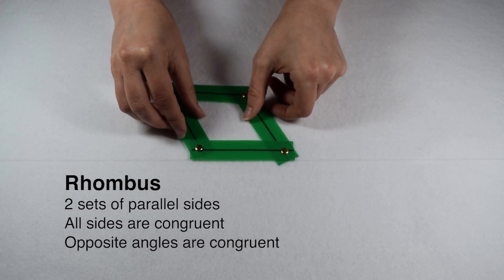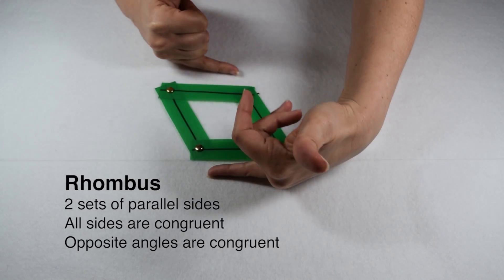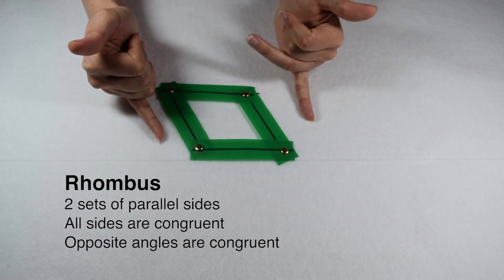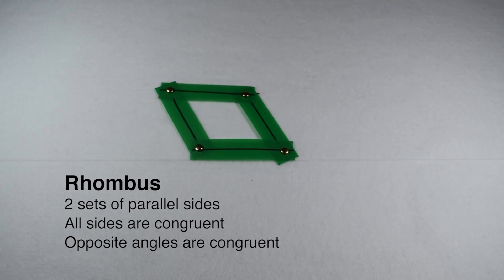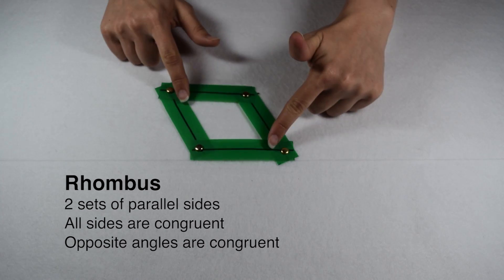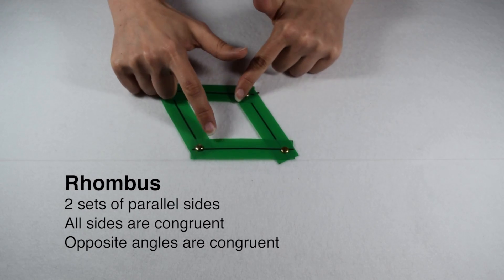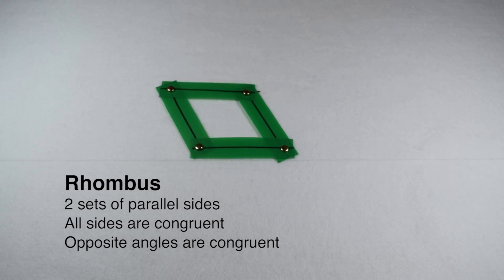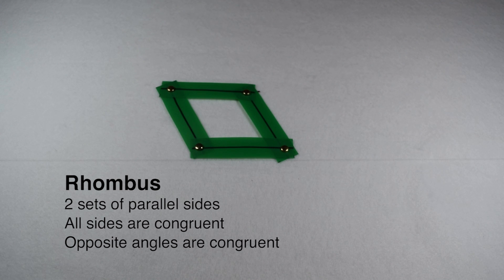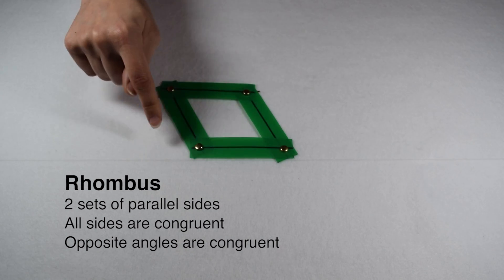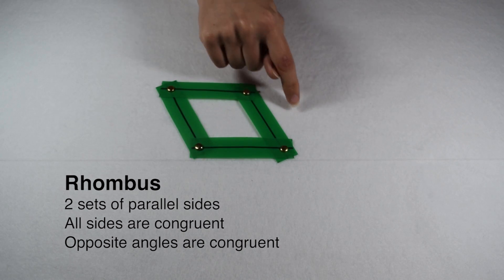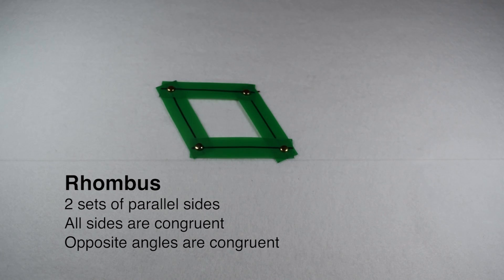On a rhombus, we have opposite sides that are parallel and we have opposite angles that are congruent. However, instead of just having opposite sides be congruent, we have all four edges that are congruent.